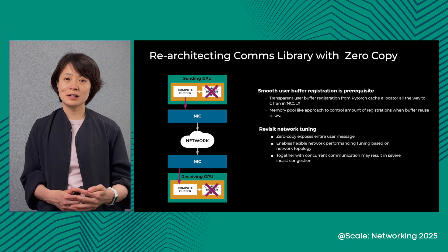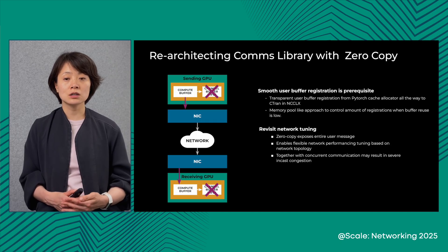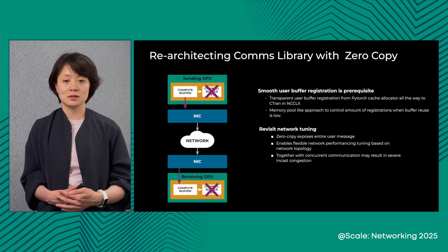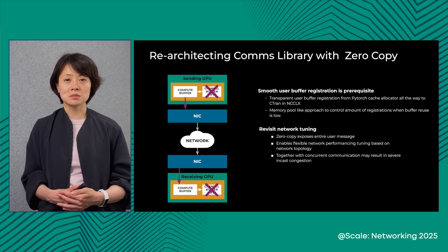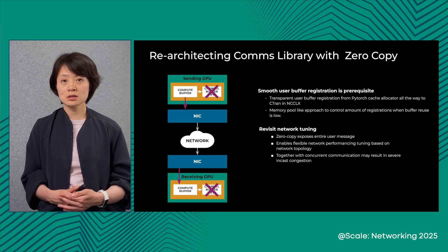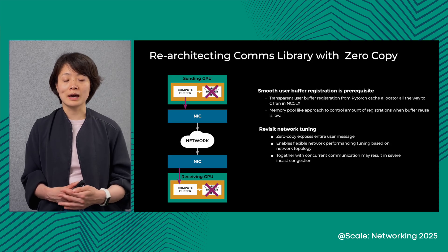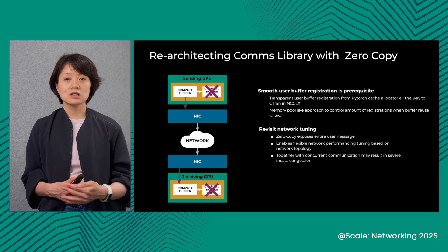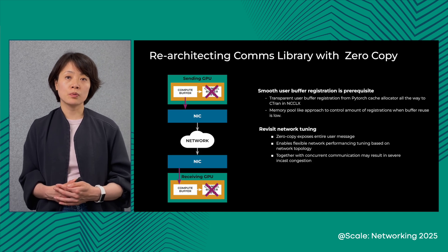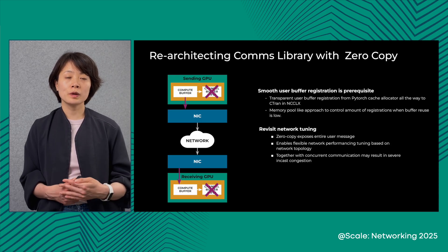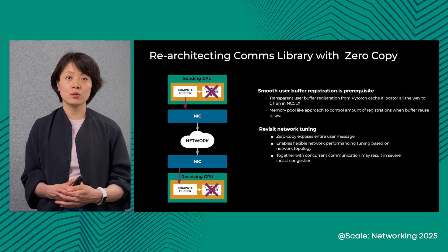As a prerequisite for zero-copy, we enable transparent user buffer registration from the PyTorch cache allocator all the way to the HCA in NCCL-X to enable RDMA access to user buffers. The cache allocator sometimes does not give good buffer reuse due to specific model behavior. In such cases, registration overhead can slow down training. As a solution, we provide a memory-pool-like approach to control the buffers used by communication, enabling zero-copy training without any visible registration overhead.